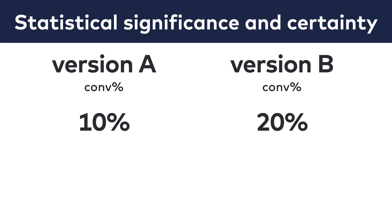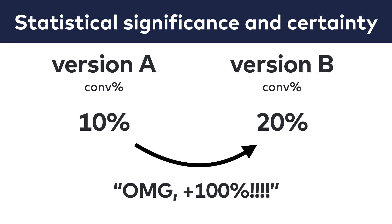What would you say if I told you that I've just done an experiment where our original version delivered a 10% conversion rate and our new version brought in 20%? Most people would say, oh my god, you doubled the conversion rate, but someone who A-B tests like a data scientist would ask for more information.